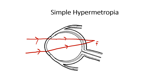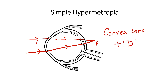In order to enable these light rays to converge on the retina, we have to increase the power by giving plus lenses or convex lenses. Thus the prescription for simple hypermetropia would be a convex sphere like plus one diopter sphere, plus two diopter sphere, plus three diopter sphere and so on. So this is about simple myopia and simple hypermetropia.